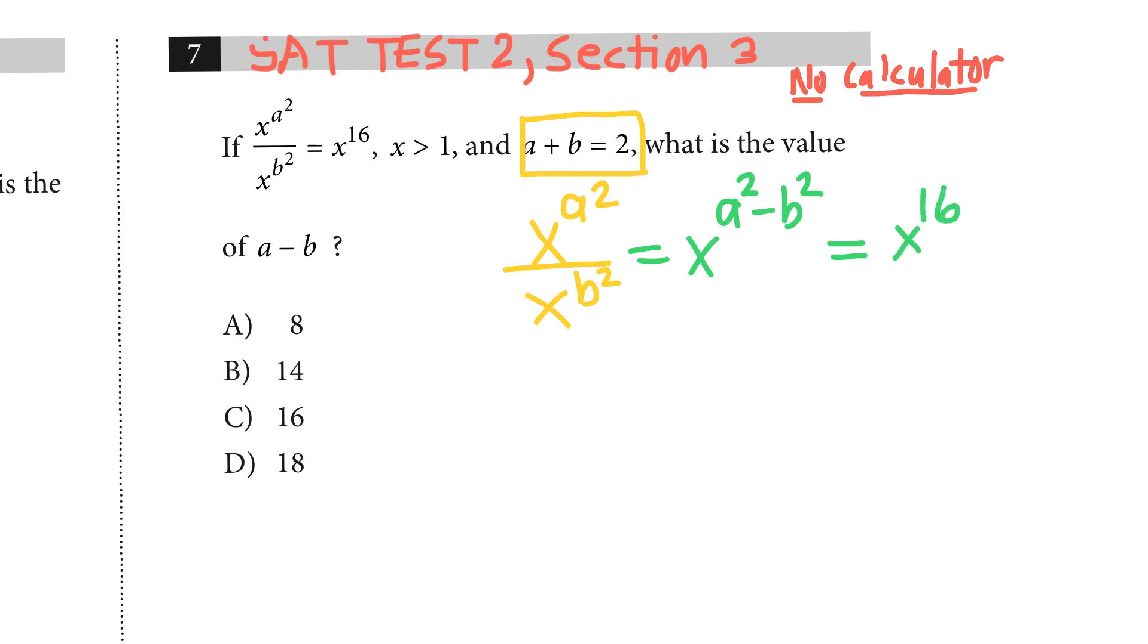Which means that this exponent a squared minus b squared has to equal 16. Because if the bases are the same here, then the exponents have to be equal to each other.